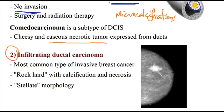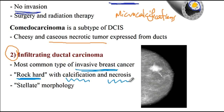The next condition is invasive or infiltrating ductal carcinoma, which is the most common type of invasive breast cancer. Due to the fibrous reaction, this tumor has a rock-hard texture. There are calcifications and necrosis associated with it, and on mammography you will see a stellate — star-shaped — morphology.